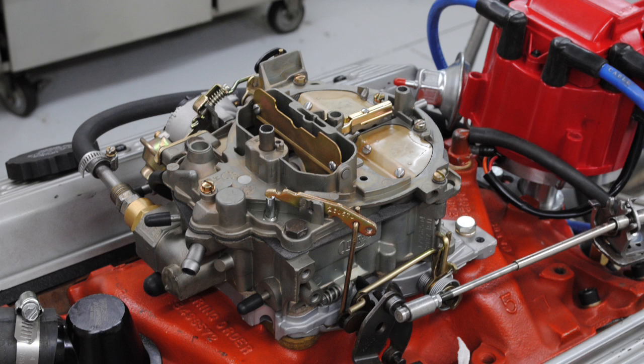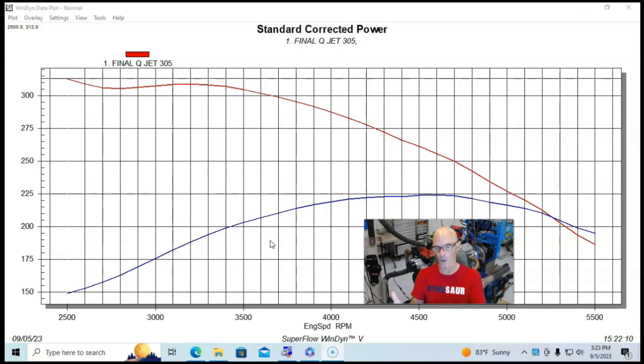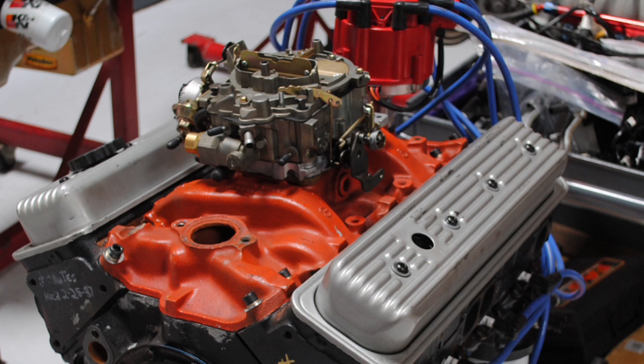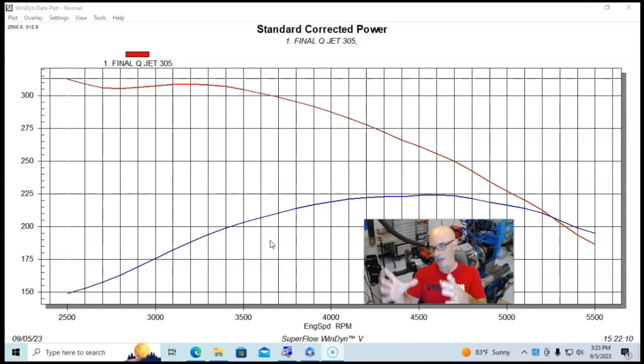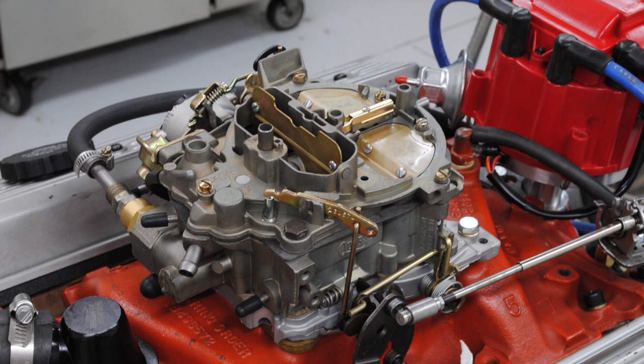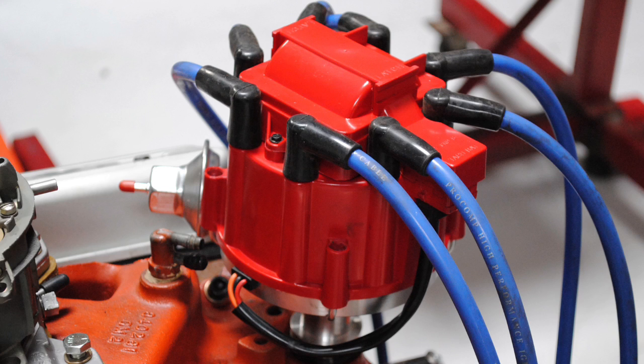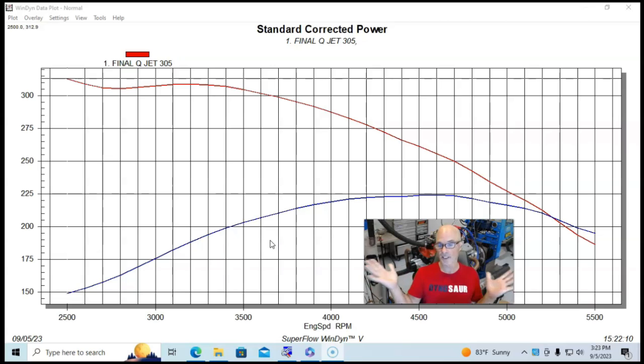So it's a tune port long block, you know, heads, cam, short block. The only thing we did was change, took the tune port off, and we put a cast iron quadrajet four-barrel manifold on it, that we've run many, many times and lots of other things. And we ran a new quadrajet, this one was from Sean Murphy, we put a distributor in this thing, and ran it in this manner, but otherwise it was basically a stock tune port 305.